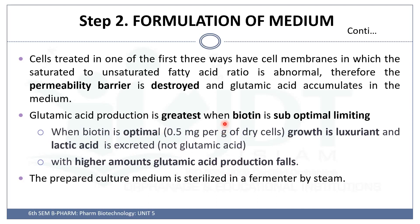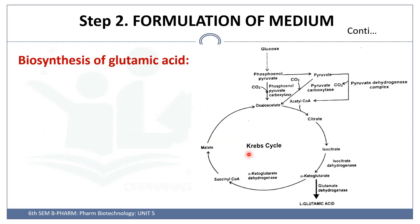After preparing the culture media, you have to sterilize it in the fermenter by steam sterilization. That is step 2: formulation of the media. In the biosynthetic pathway, glutamic acid is a product of the Krebs cycle intermediate pathway.